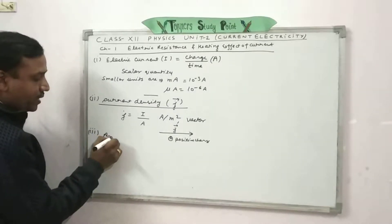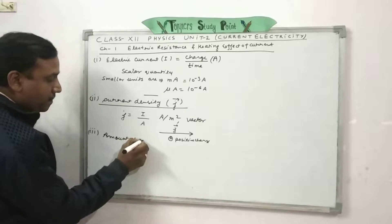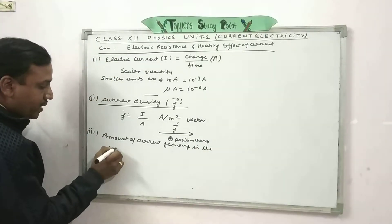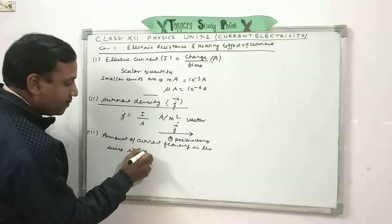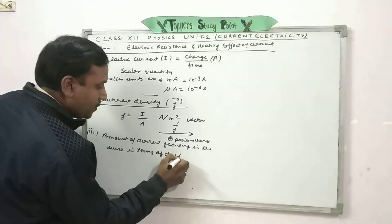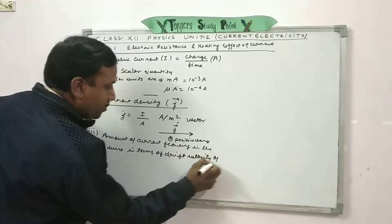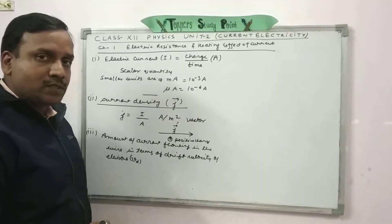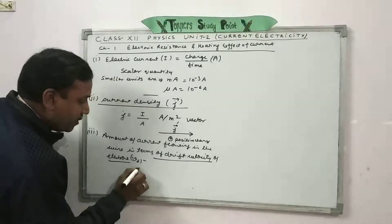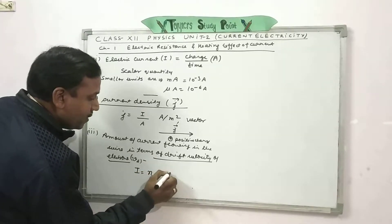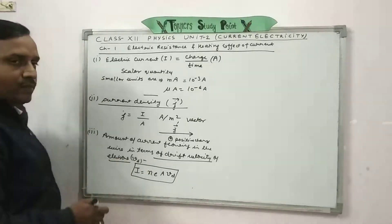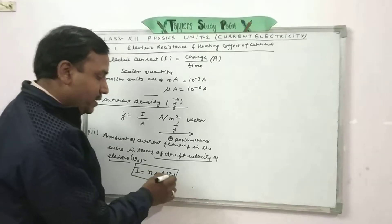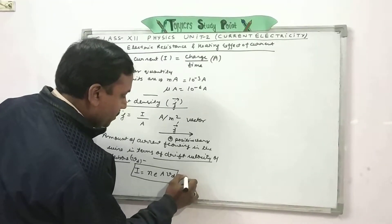Next is the amount of current flowing in a conductor or wire, expressed in terms of drift velocity of electrons, represented as V_D. Its formula is I = N·E·A·V_D, where N is the number of electrons per unit volume of the conductor, E is the electronic charge, A is the cross-sectional area of the wire, and V_D is the drift velocity. Current is measured in ampere.